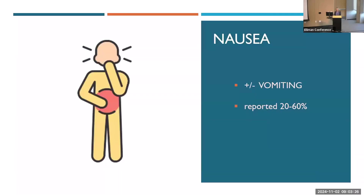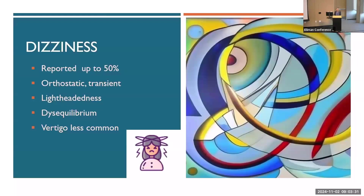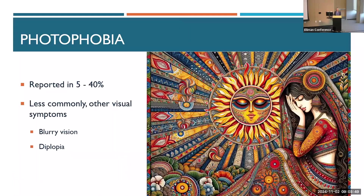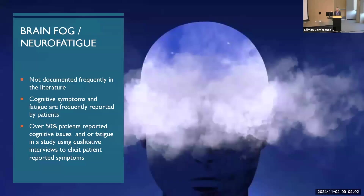Nausea is reported in 20 to 60% of patients; I would suggest I see it probably slightly more than that in my patients. Dizziness is frequently reported — not just vertigo, but probably more commonly that lightheaded disequilibrium, that trampoline-type walking, feeling like you're in a bouncy castle or feeling off balance. Sensitivity to light is a frequently reported symptom, along with other visual symptoms — less commonly diplopia, but we do see blurry vision and diplopia. Photophobia is a very, very frequently reported symptom.